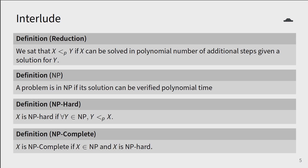Similarly, we define NP to be the class of problems that can be verified in polynomial time. Now if for all problems Y in NP, Y is reducible to X, then X is said to be NP-hard. That is, all the problems in NP can be solved in polynomial time using a black box algorithm that solves X. Finally, a problem is NP-complete if it's in NP and is also NP-hard.